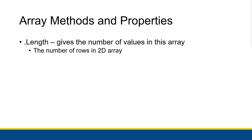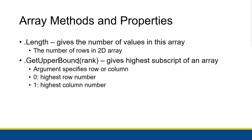As for array methods and properties: .Length gives the number of values in the array, but since we have a 2D array, it actually gives the number of rows — which is very important to note. Then the GetUpperBound method gives the highest subscript. For a 2D array it works differently than a 1D array: you specify whether you want the highest row subscript or the highest column subscript. Passing in 0 gives the highest row number; passing in 1 gives the highest column number.